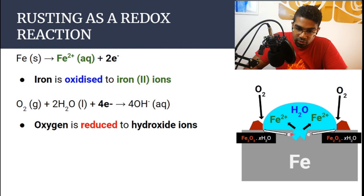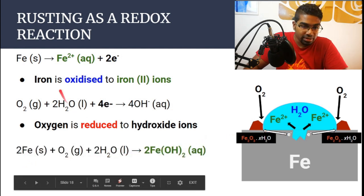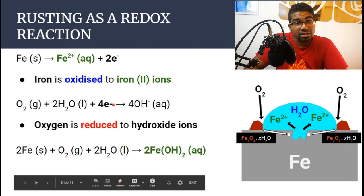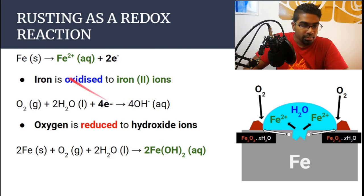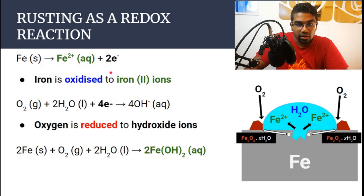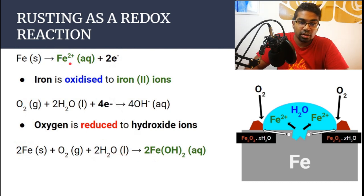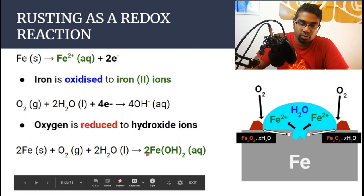The electrons travel from iron at the center towards the edge of the water droplet where oxygen is reduced. These are the two half reactions, and this is the net equation: two moles of iron react with one mole of oxygen in the presence of two moles of water to form two moles of iron-2 hydroxide. To combine the half equations, we equate the number of electrons — since four electrons are gained, four electrons have to be lost. That is why we get two moles of iron, and everything is multiplied by two: two moles of iron-2 ions and four moles of hydroxide ions.